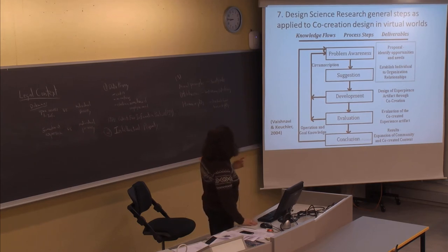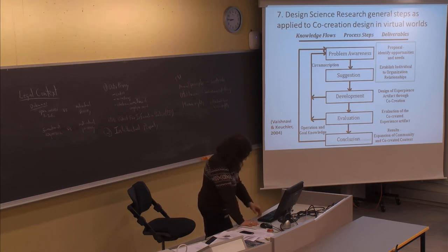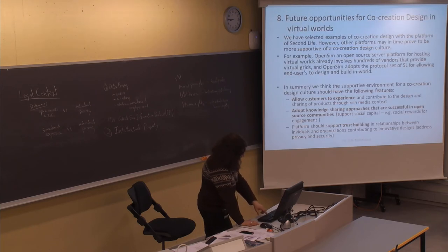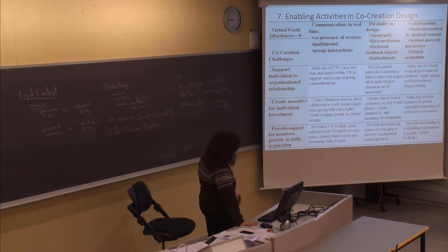This is a basic design science approach where you look at the problem and make suggestions — it's a circular approach for designing artifacts. With a co-creation design approach using design science, being able to look at these factors and apply them in other circumstances is part of the main point of this presentation.